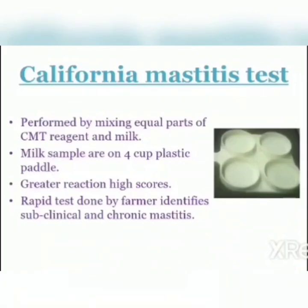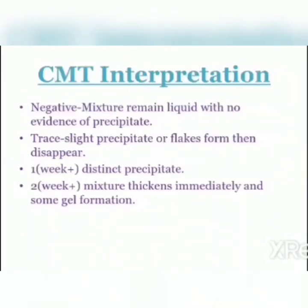The California Mastitis Test (CMT) is a rapid test done by farmers even at farm level to identify subclinical or chronic mastitis. Milk is taken from each quarter onto a 4-cup plastic paddle, then an equal part of CMT reagent is mixed with the milk. After mixing for a minute, we observe the solution. If the mixture remains liquid with no evidence of precipitate, it is negative — no mastitis. If a slight precipitate or flakes form and then disappear, there is trace mastitis. If persistent precipitate forms with the mixture thickening immediately and some gel formation, mastitis has persisted for more than 2 weeks.